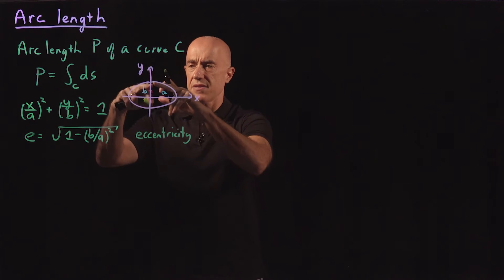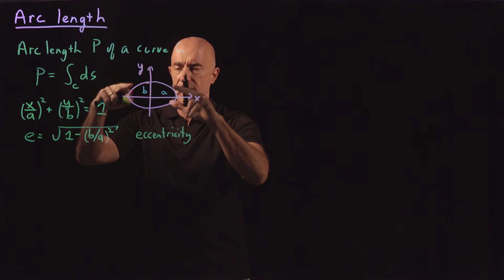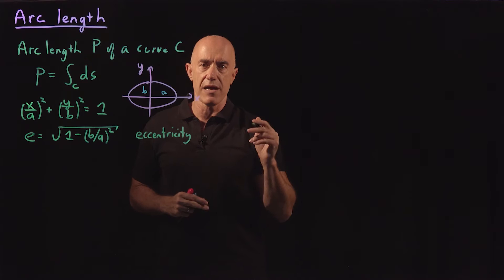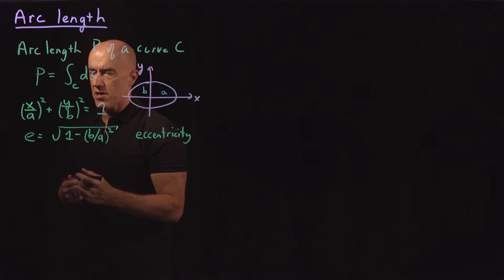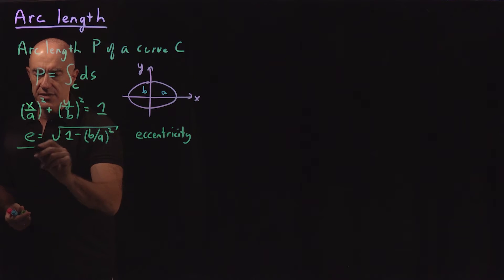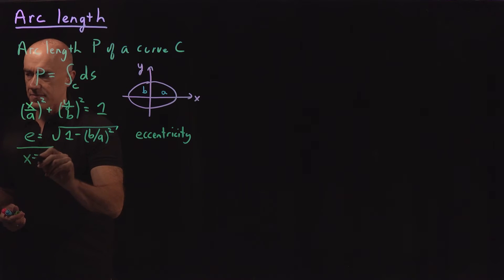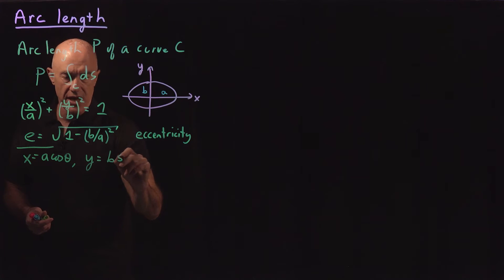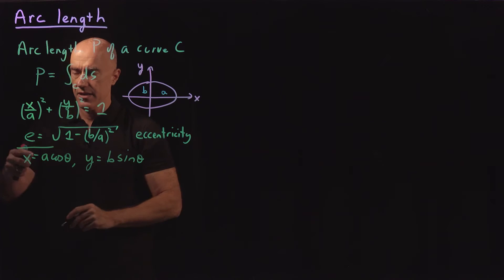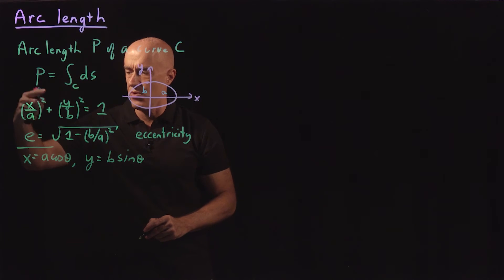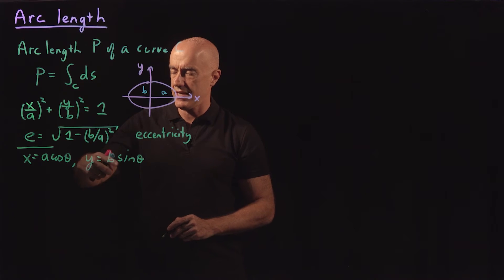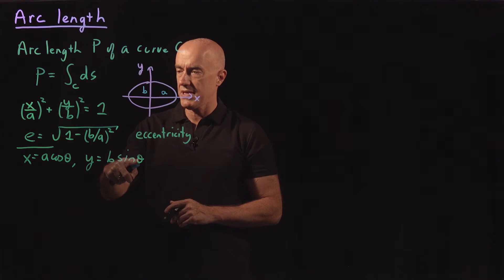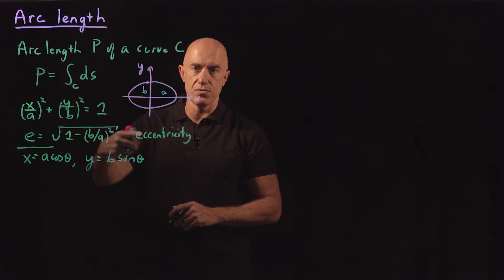We're going to compute the perimeter of the ellipse — this arc length — by parameterizing the ellipse. The parameterization is x equals a cosine theta, y equals b sine theta. So x over a squared is cosine squared theta, y over b squared is sine squared theta, and that equals 1. This parameterizes the ellipse, and theta goes from 0 to 2 pi.